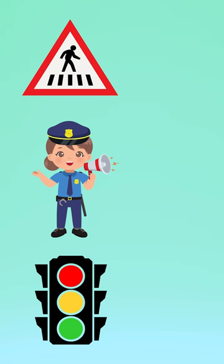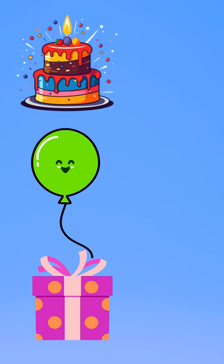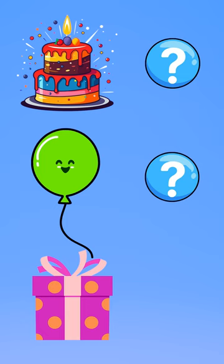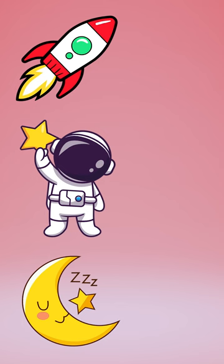Where is the triangle? Let's find a square. Let's find an oval. Let's search for the crescent.